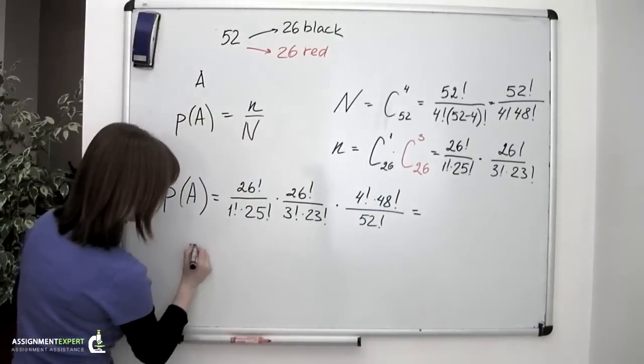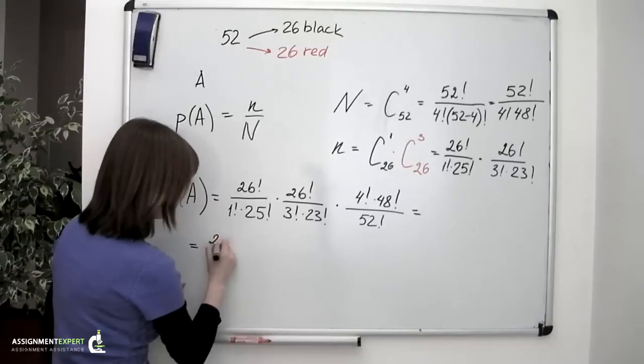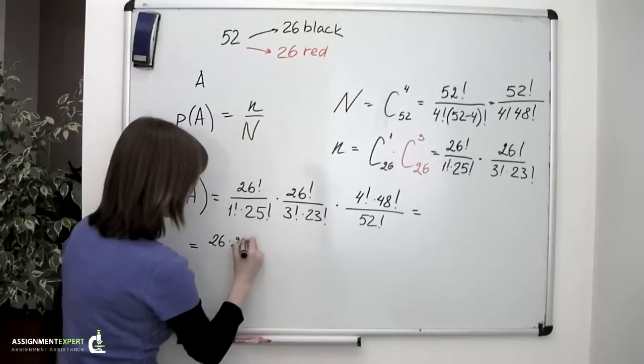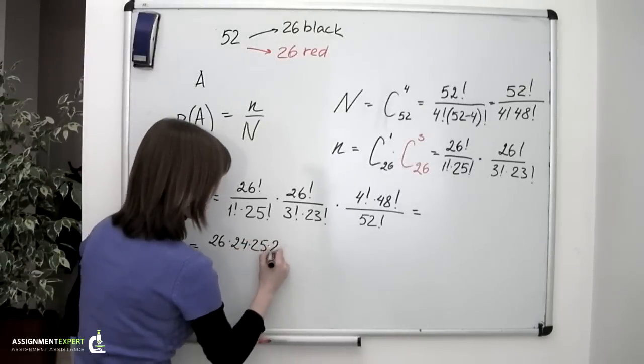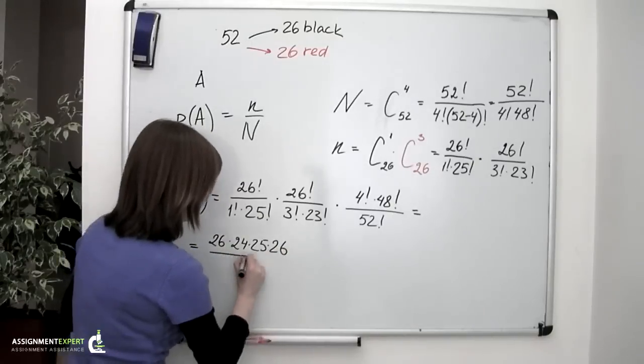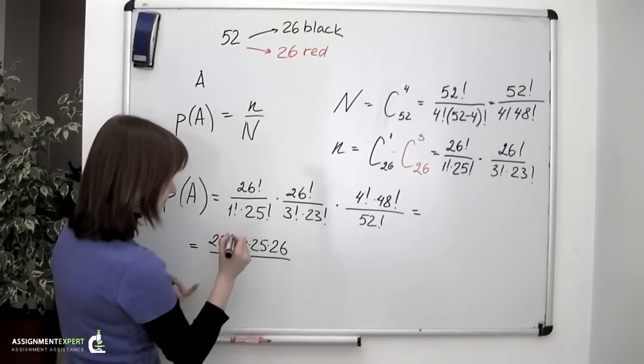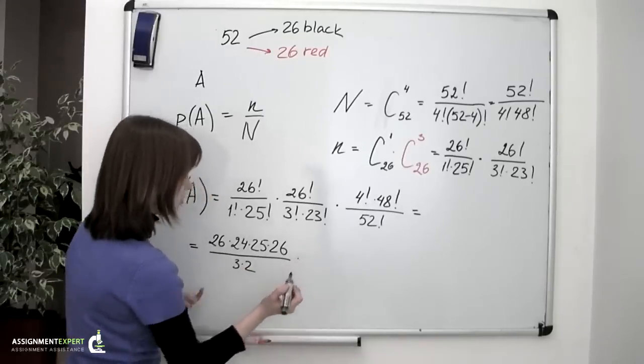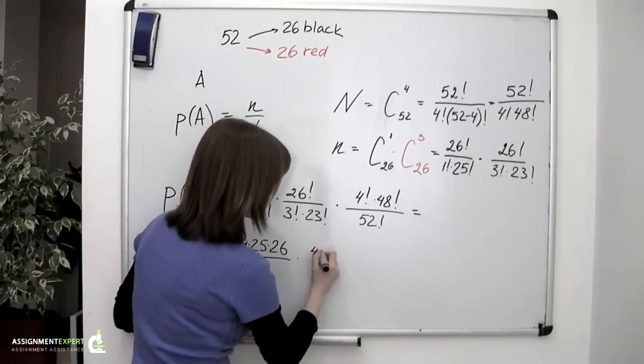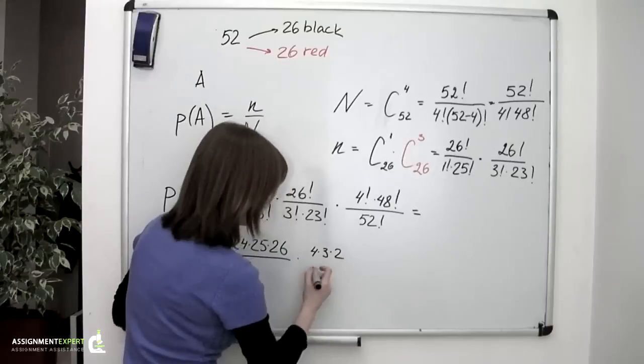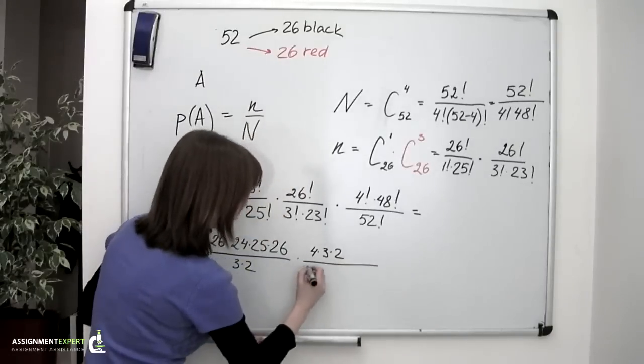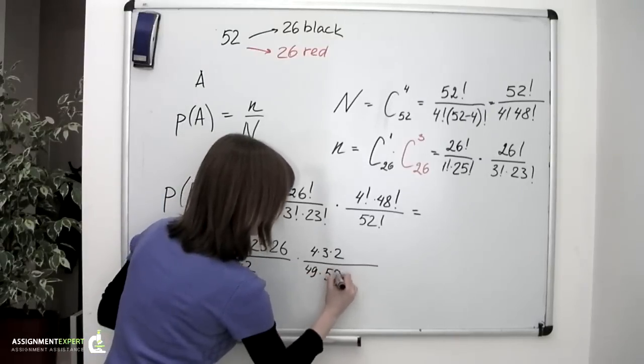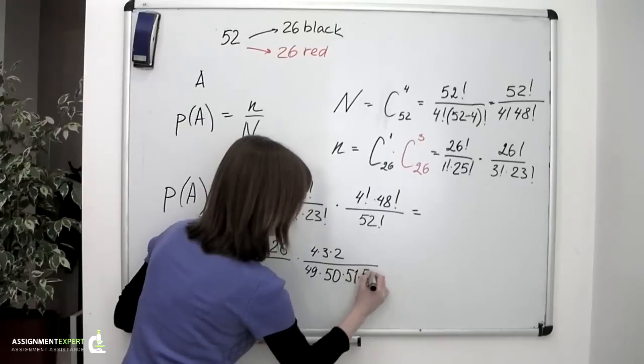So we'll have 26 times 24 times 25 times 26 divided by 3 times 2, and this whole thing goes multiplied by 4 times 3 times 2 and divided by 49 times 50 times 51 and times 52.